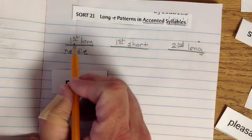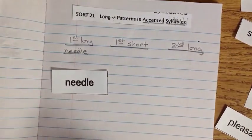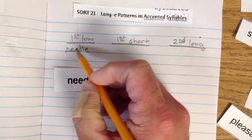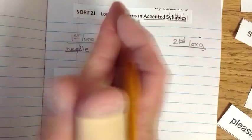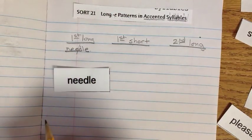So we've got needle. Needle. Accent is in the very beginning. Accent is in the beginning. Alright? You'll notice that the N-E-E is the first syllable. Needle.